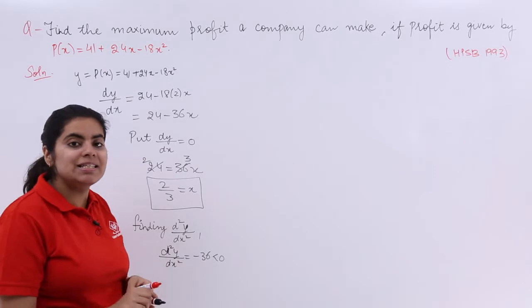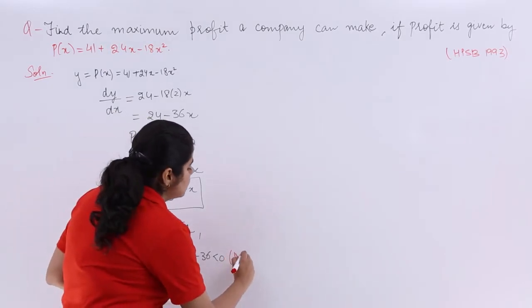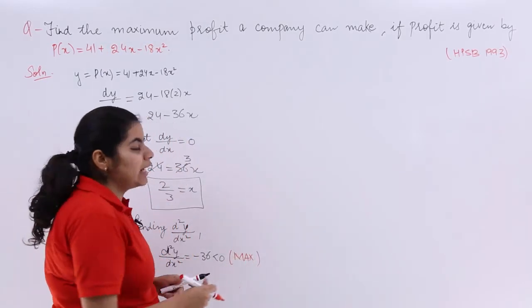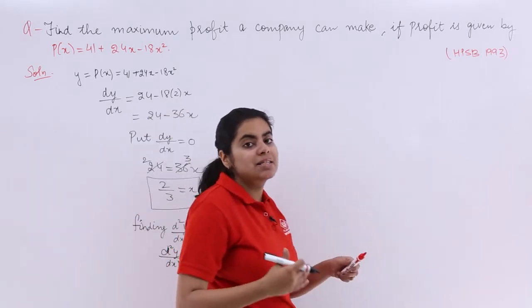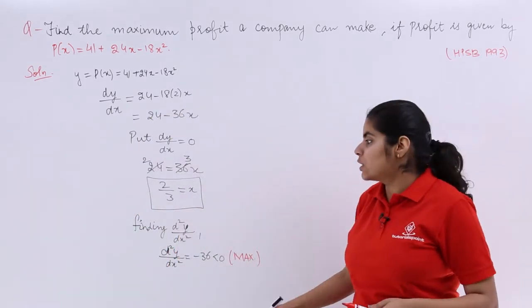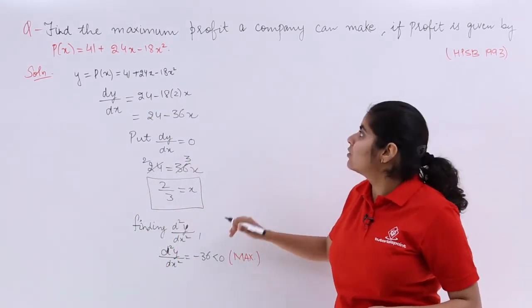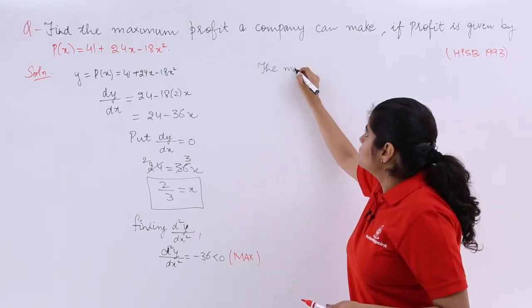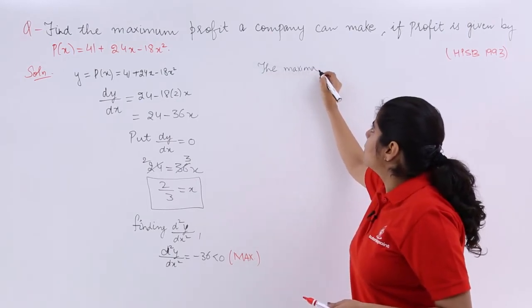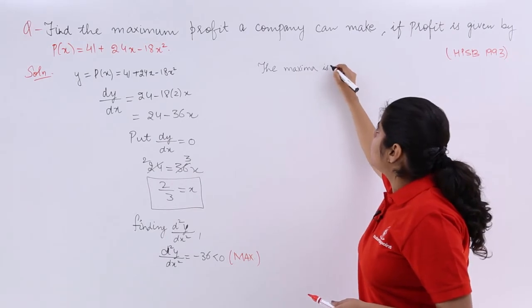And anything less than 0 in second order derivative gives me a maxima. So that means definitely I'm going to get a maxima and the maxima is corresponding to x = 2/3. So I write the maximum, or the maxima is obtained.